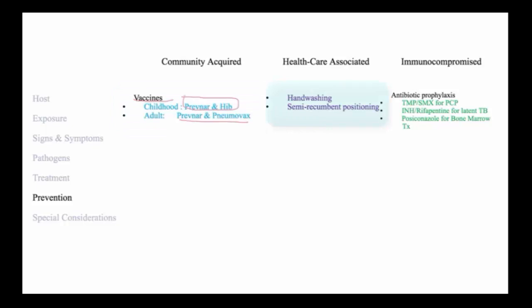In the healthcare setting, healthcare-associated pneumonia is prevented with assiduous hand-washing and care to minimize aspiration, especially by placing people in semi-recumbent or partially upright positions.